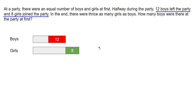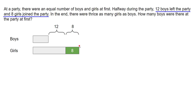We mark off the 12 boys who left — this portion is gone. And 8 girls joined the party, so an additional 8 is added to the girls' bar. We mark this out to show it's removed from the boys. So from the boys' bar, a constant 12 students are removed, and on the girls' side, 8 students are added. This whole section from the boys and girls combined represents 12 and 8 students.